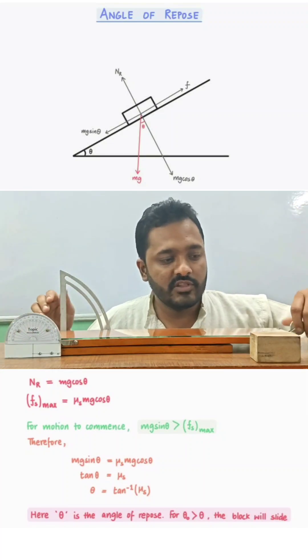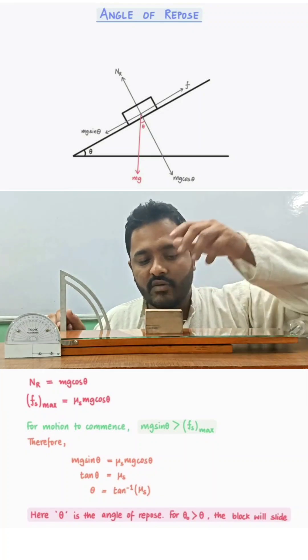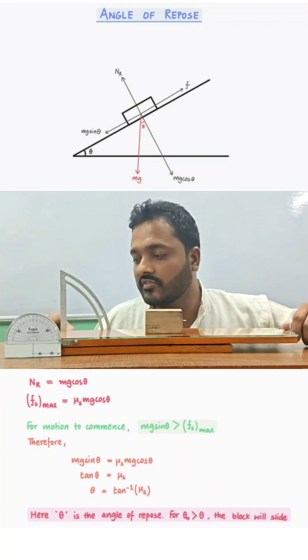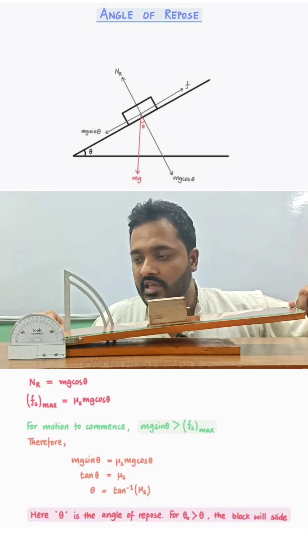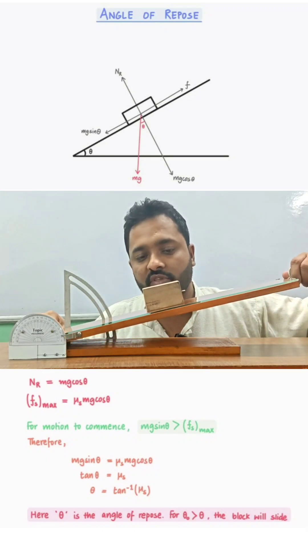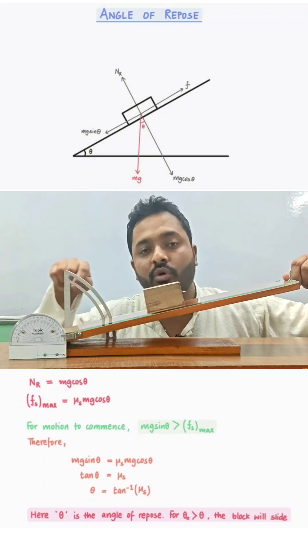We will fix the block over here and find out at what angle the block starts sliding due to its own weight. As we increase this angle, a component of the weight of the block acts down the incline.